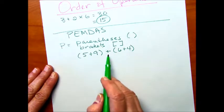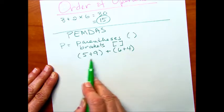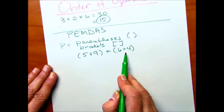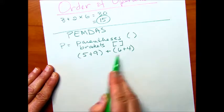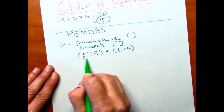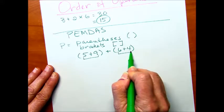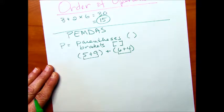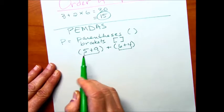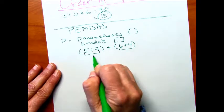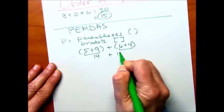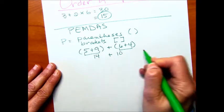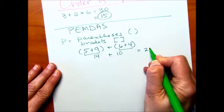And notice that we have addition here. We're going to add this quantity to this quantity. But you really can't add these two together until you take care of what's going on inside the parentheses first. So let's go ahead and do that. We've got 5 plus 9, that's going to be 14, plus 6 plus 4 is 10. 14 plus 10 will give you 24.